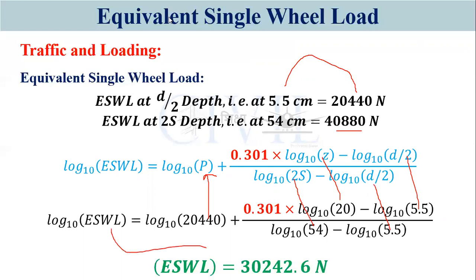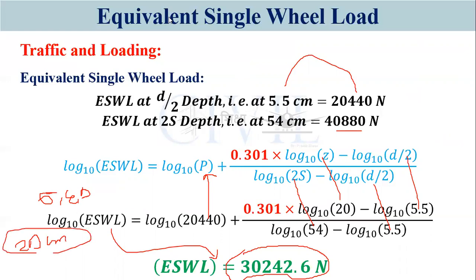Applying the Boyd and Foster relationship with these values and taking the antilog, you get ESWL = 30,242.6 N. This means that applying a single load of approximately 30,242.6 N will produce the same stress, strain, and deflection at a depth of 20 cm as the two tires of 20,440 N each. For pavement design, you use this 30 kN single load instead of multiple wheel loads.